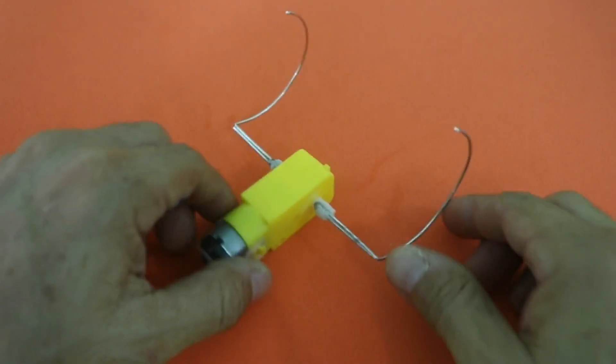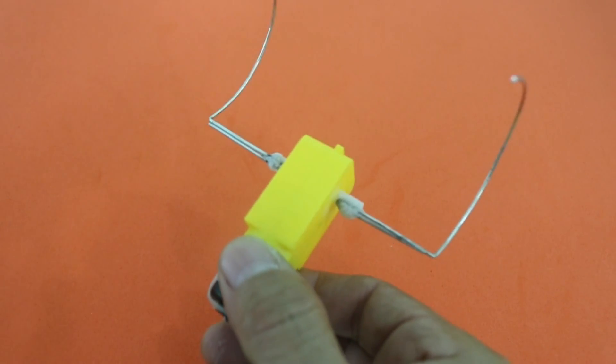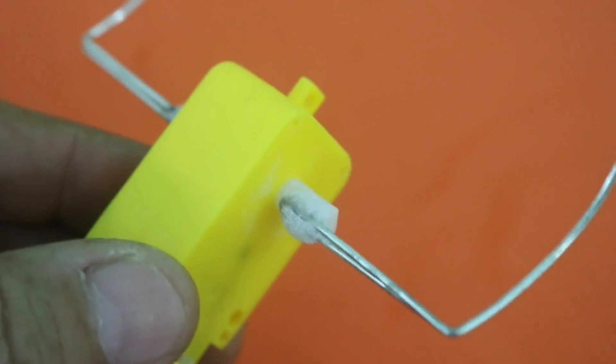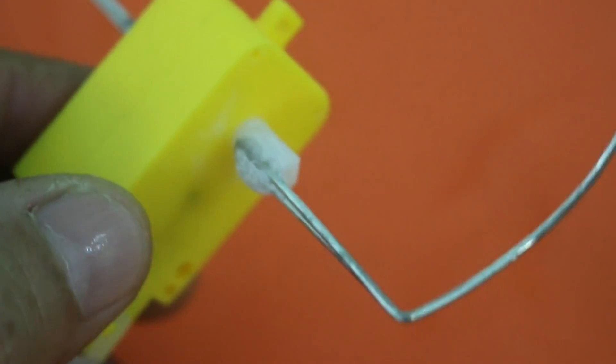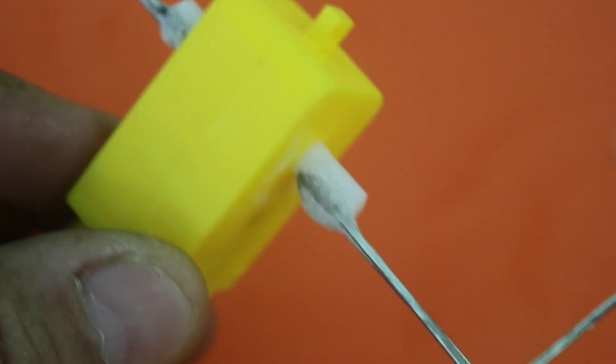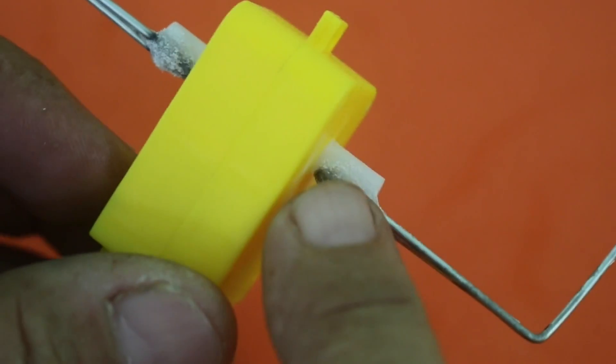Once you bend the legs you need to glue them to the axis of the motor. I used cyanoacrylate mixed with sodium bicarbonate. This creates a very strong mix.